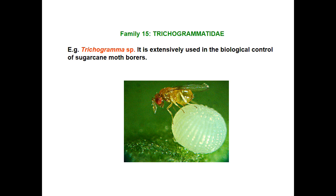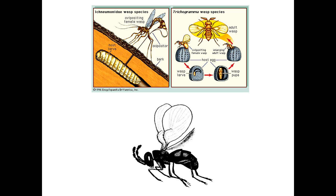Next family is Trichogrammatidae — Trichogramma species. They are minute insects and egg parasites. The tarsus is three-segmented. The fore wing is broad with pubescence in rows. The hind wing is reduced and fringed with hairs along the margin. They are mainly egg parasitoids on lepidopteran insects. Best example is Trichogramma species. This ends the presentation.